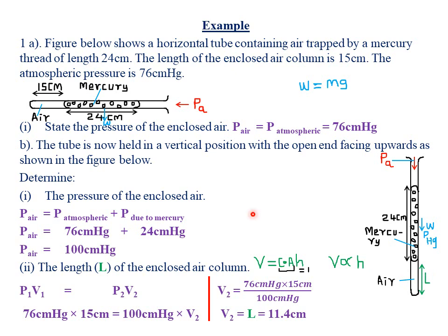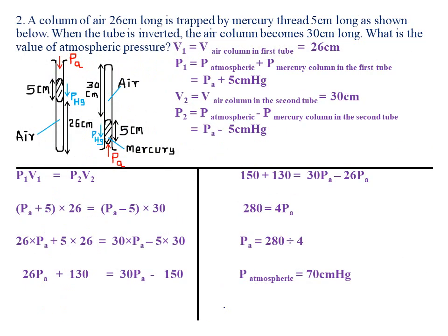Our second example: a column of air 26 cm long is trapped by a mercury thread 5 cm long. When the tube is inverted the air column becomes 30 cm. We need to find the atmospheric pressure. Using Boyle's Law, V1 = 26 cm (length of air column in the first tube).